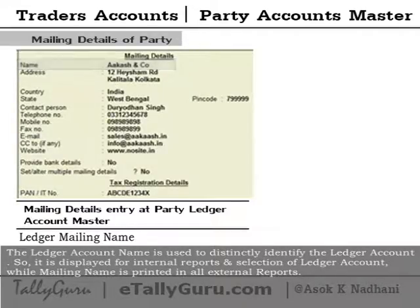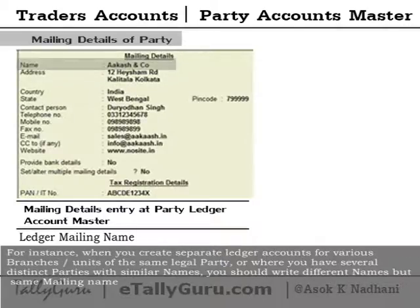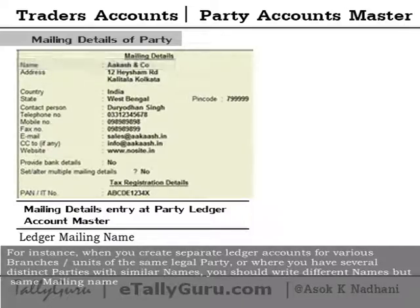So it is displayed for internal reports and selection of ledger account, while the mailing name as specified by you is printed in all external reports. For instance, when you create separate ledger accounts for various branches or units of the same legal party, or where you have several distinct parties with similar names, you should write different ledger names but the same mailing name.